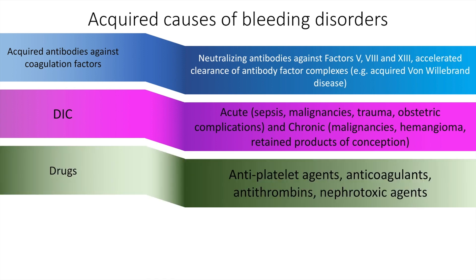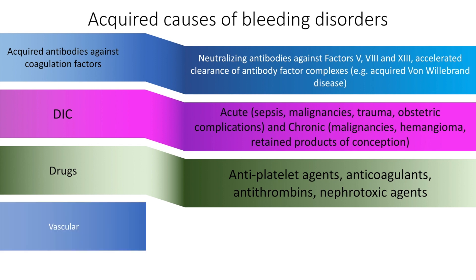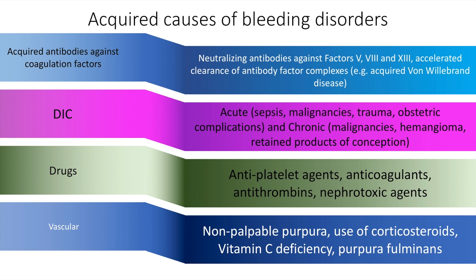Drugs such as antiplatelet agents, anticoagulants, antithrombins, and nephrotoxic agents may all cause bleeding manifestations. Vascular causes such as non-palpable purpura, use of corticosteroids, and vitamin C deficiency are also acquired causes of bleeding disorders.